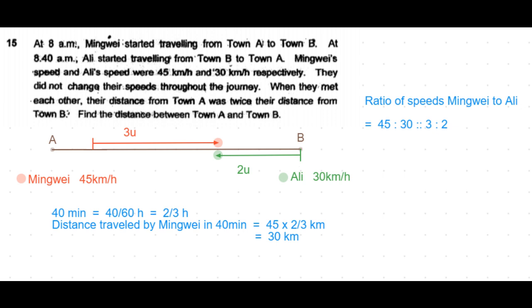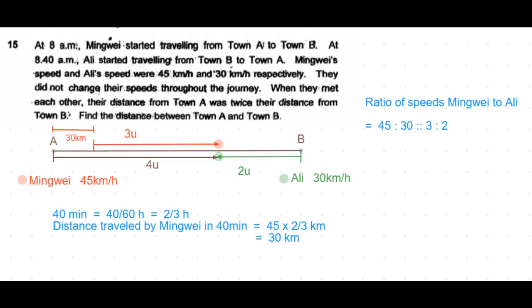But we know that from the question it says that from that meeting point, the distance to Town A was twice the distance to Town B. The distance to Town B we have taken it as 2 units, which means the distance to Town A should be 4 units.